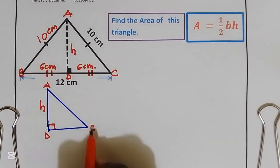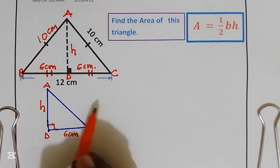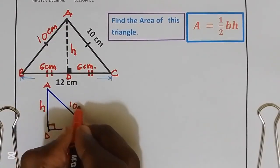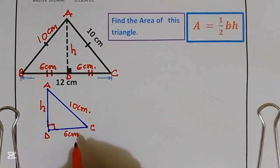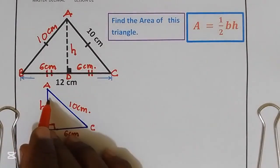Distance DC we get is 6 centimeters, and distance AC is equal to 10 centimeters. We are going to use Pythagorean theorem on this triangle to get the height.